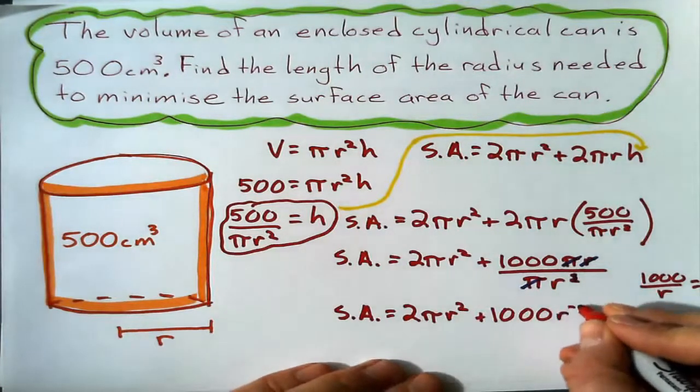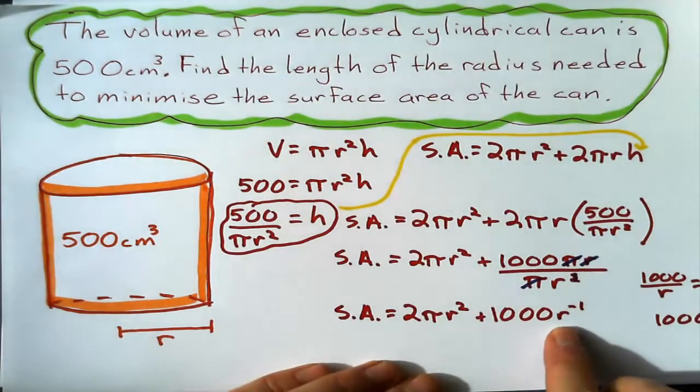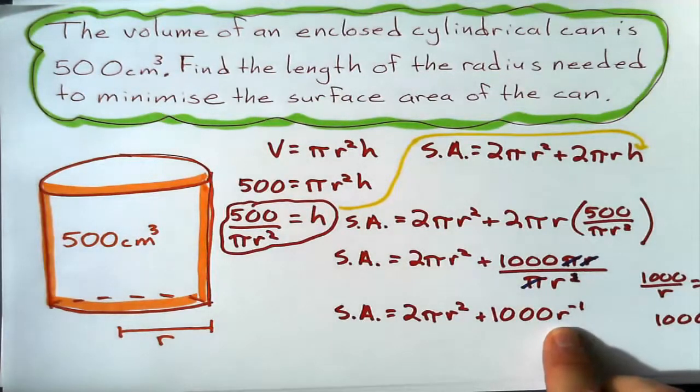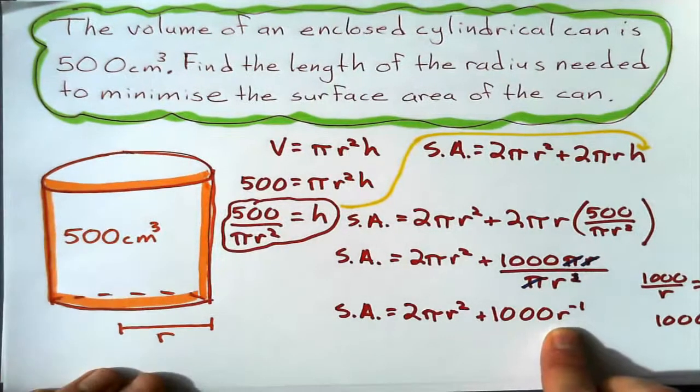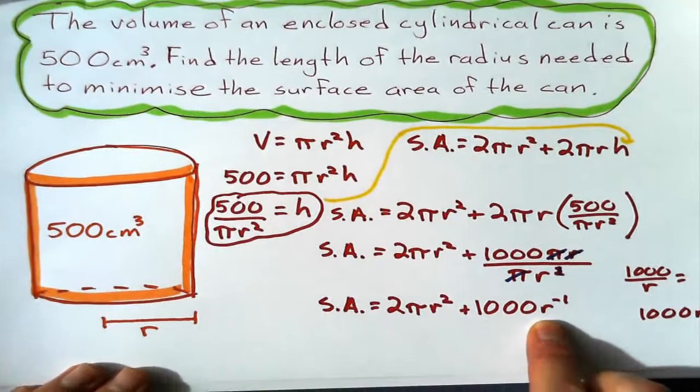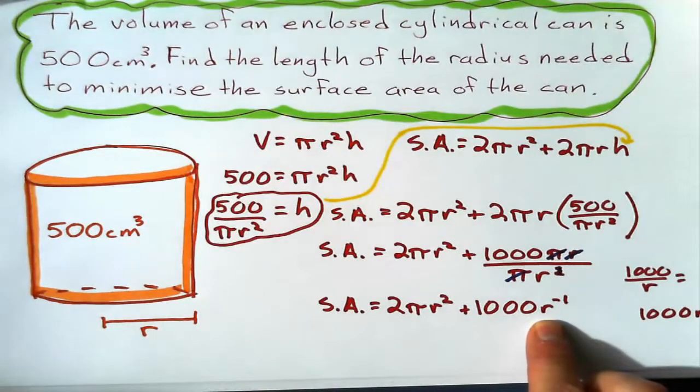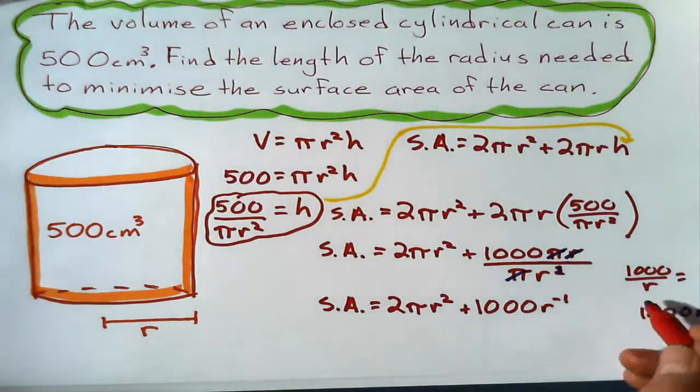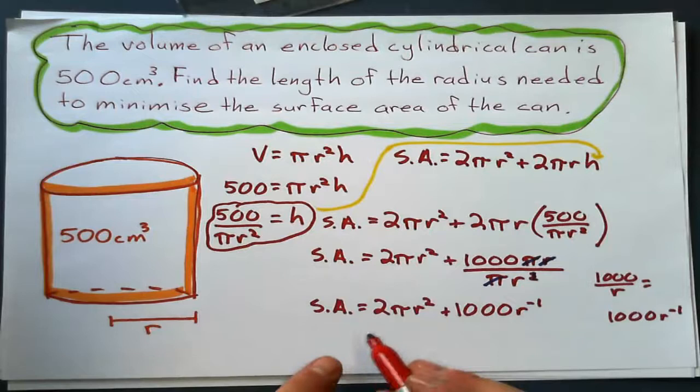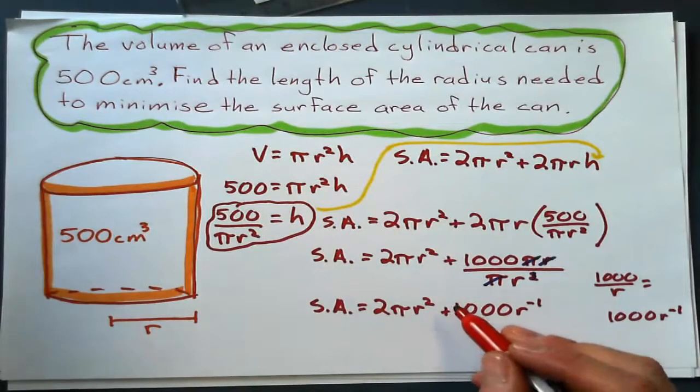Now, why I'm doing that? Why I'm writing that r to the negative 1? Because there's going to be some calculus going on. I have to do some calculus on it. And if I'm doing calculus on it, I want exponents. If there's going to be differentiating, I want exponents, not over r. So, now that we've done all this algebra, now we do the calculus.